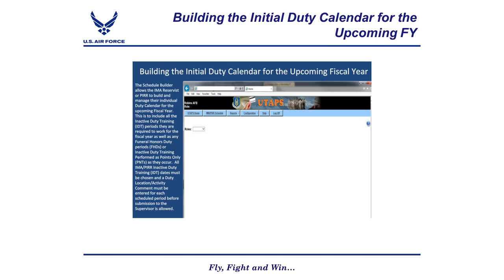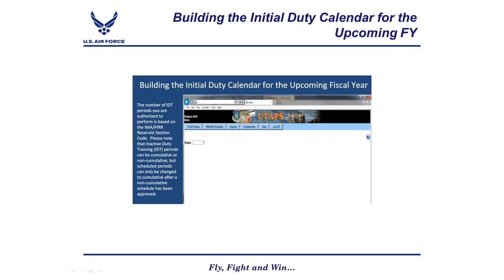The Schedule Builder allows the IMA Reservist or PIRR to build and manage their individual duty calendar for the upcoming fiscal year. This includes all inactive duty training periods required for the fiscal year, as well as any funeral honors duty periods or IDT performed as points only. All IMA PIRR inactive duty training dates must be chosen and a duty location activity comment must be entered for each scheduled period before submission to the supervisor. The number of IDT periods you are authorized to perform is based on the IMA PIRR Reservist Section Code. Note that IDT periods can be cumulative or non-cumulative, but scheduled periods can only be changed to cumulative after a non-cumulative schedule has been approved.